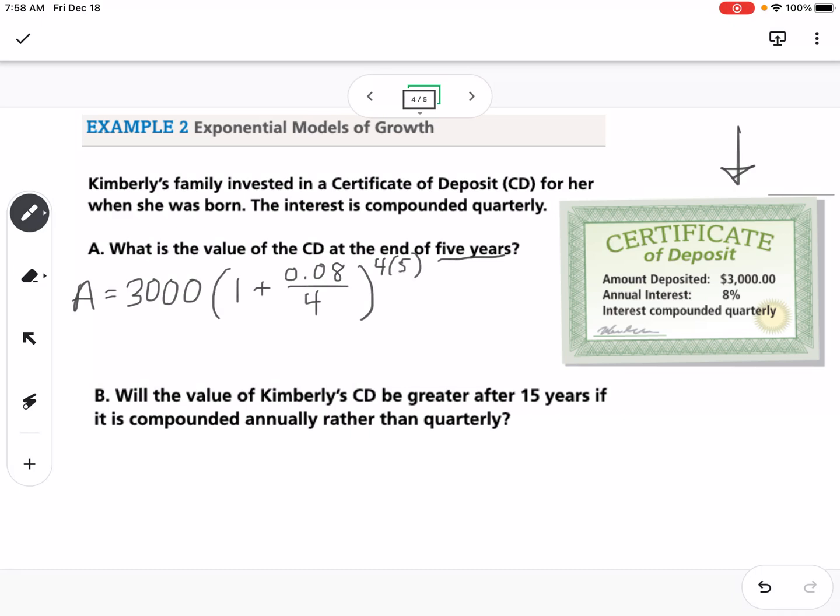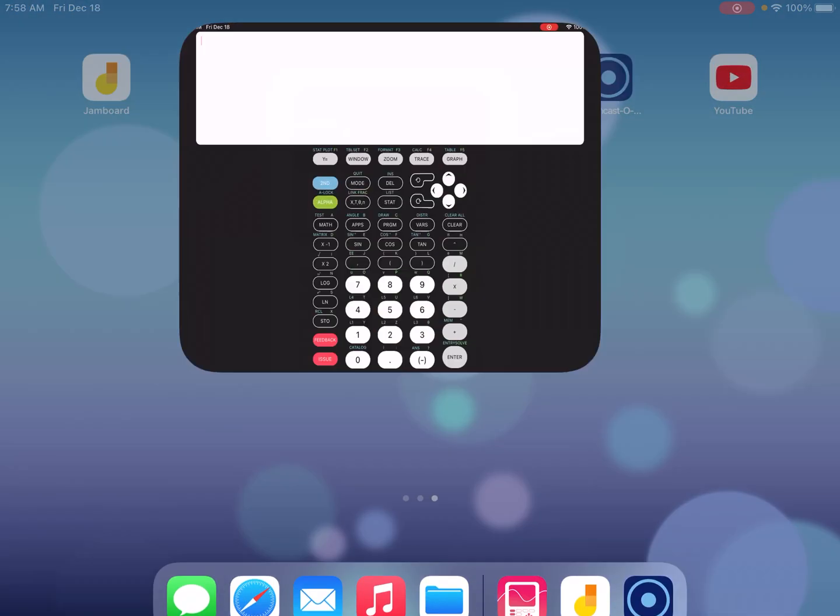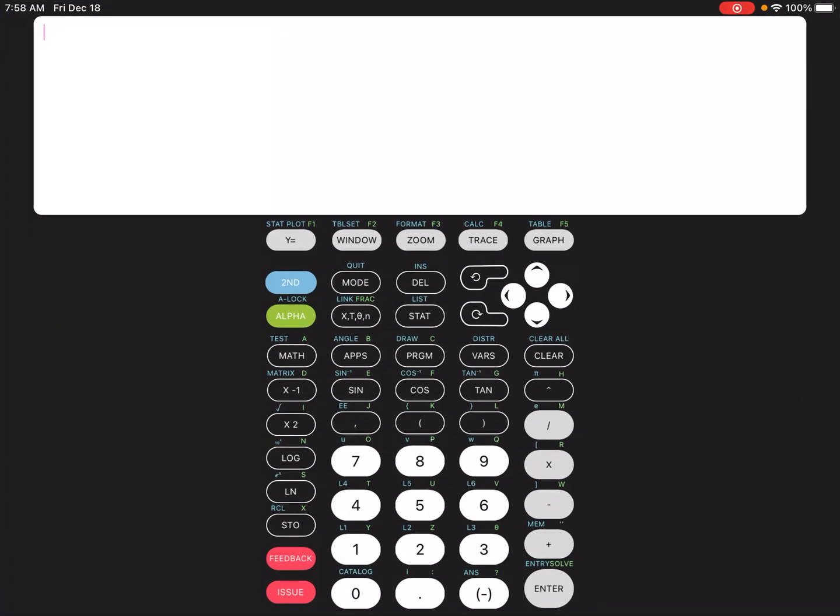So now I'm going to switch over here. I want to show you what this is going to look like on our calculator. This is the Calculate84 app. So I'm going to type in 3,000 parentheses (1 + 0.08 divided by 4), close parentheses, and then I'm going to use underneath the clear button that little caret key to get the exponent, and I'm going to type 4 times 5.